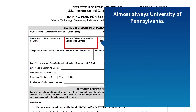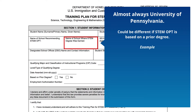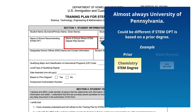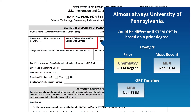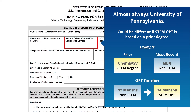Name of school where the STEM degree was earned — this will almost always be Penn. However, there are some cases where your STEM extension could be based on a prior degree from a different school. For example, a student received a Bachelor of Science in Chemistry at Drexel, then completed an MBA at Penn, received 12 months of post-completion OPT based on the MBA. When approaching the end of that 12-month OPT, the student can apply for a 24-month STEM OPT extension based on the prior Bachelor's in Chemistry, as long as the STEM OPT qualifying job is directly related to Chemistry. In this example, the student would list Drexel as the school that conferred the STEM degree.